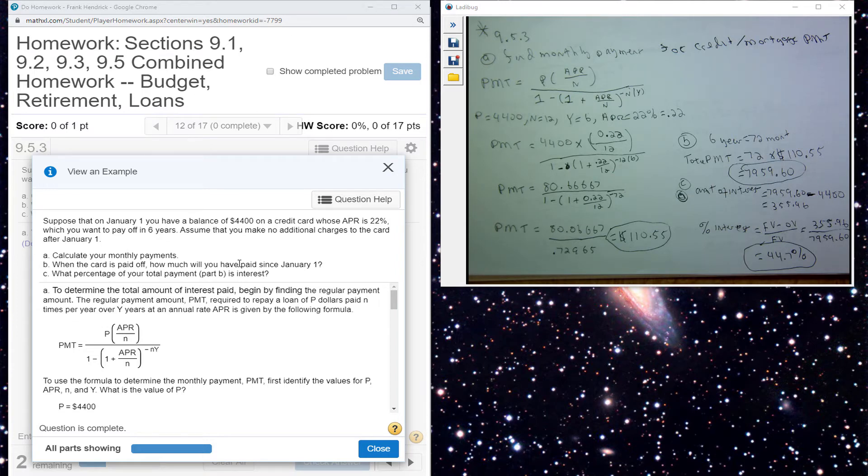Suppose on January 1st you have a balance of $4,100 on a credit card whose APR is 22%. You want to pay it off in six years so you make no additional charges to the card after generating your first monthly payments. So I have assigned values to my variables here, then I plug it in and I simplify my numerator.